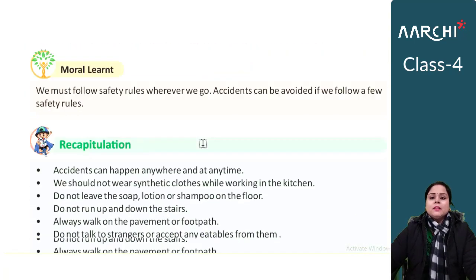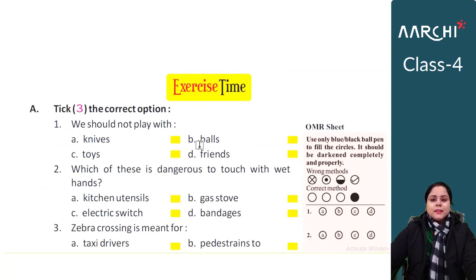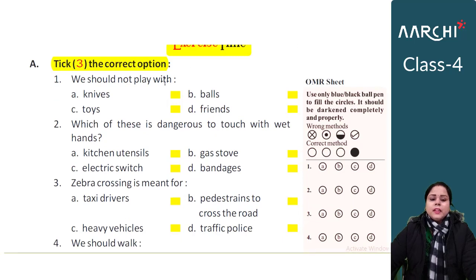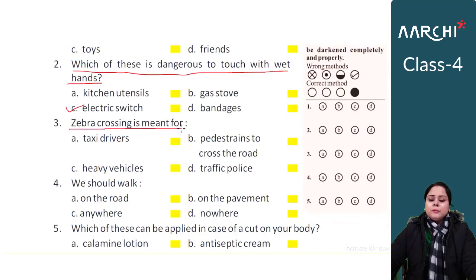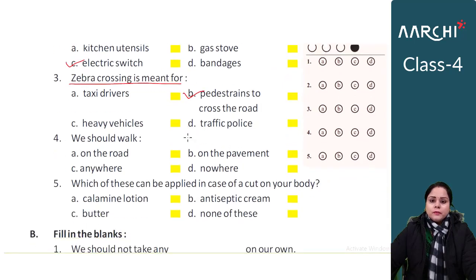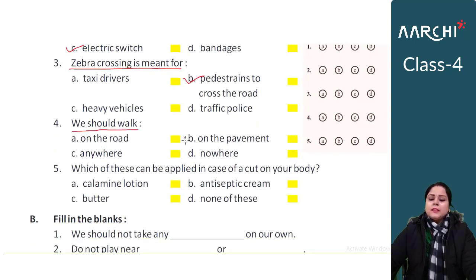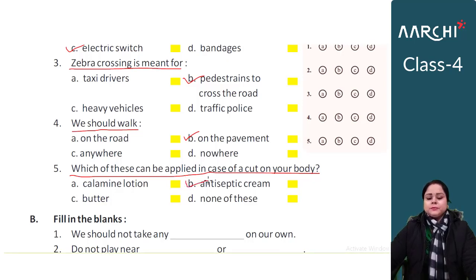This was our Safety Rules and First Aid concept with explanation. Now let's go to the exercise part. First is tick the correct option. Question 1: We should not play with — answer is knives. Question 2: Which of these is dangerous to touch with wet hands — answer is electrical switches. Question 3: Zebra crossing is meant for — answer is pedestrians to cross the road. Question 4: We should walk on the pavement. Question 5: Which of these can be applied in case of a cut — answer is antiseptic cream.